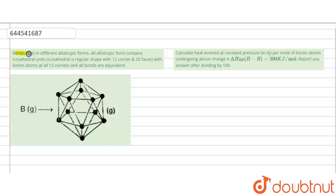Our question says boron exists in different allotropic forms. All allotropic forms contain icosahedral units. Icosahedral is a regular shape with 12 corners and 20 faces, with boron atoms at all 12 corners, and all bonds are equivalent.